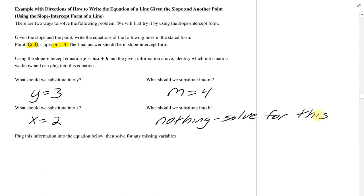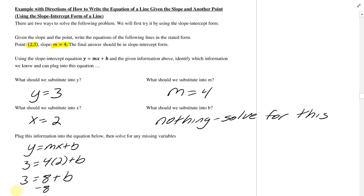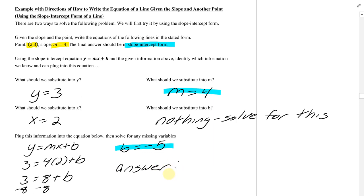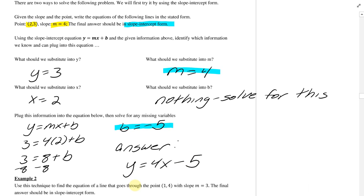Now I want to plug this information into my y equals mx plus b form: 3 equals 4 times 2 plus b. I want to solve for b. This becomes 3 equals 8 plus b. Subtract the 8 from each side and I get b equals negative 5. Now use the b you found and the m you have to state this in slope-intercept form. Your answer is y equals 4x minus 5.